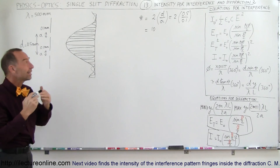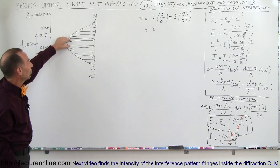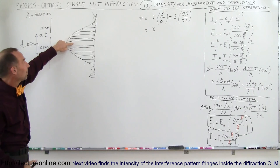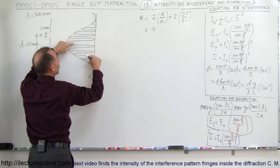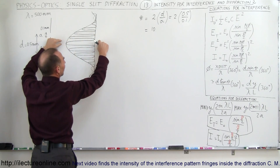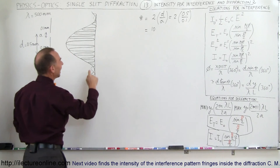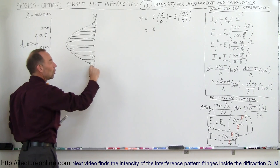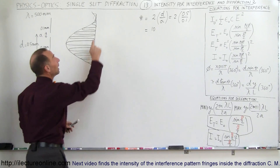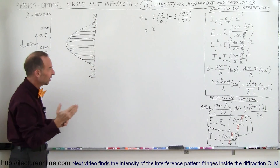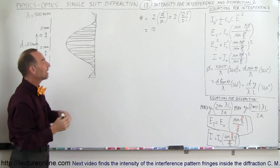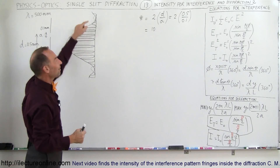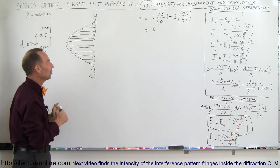It's not quite exactly 10 fringes as we might envision it, because we have a central fringe due to the central maximum of the interference pattern, then four more complete fringes on each side: 1, 2, 3, 4 — so that's 4 plus 4 is 8, plus the central one is 9. Exactly at the location where the minimum of the diffraction pattern occurs, there would be a maximum of the interference pattern on both sides — kind of a half maximum canceled out by the diffraction minimum. So we have 9 plus a half plus a half, which gives basically 10 fringes.